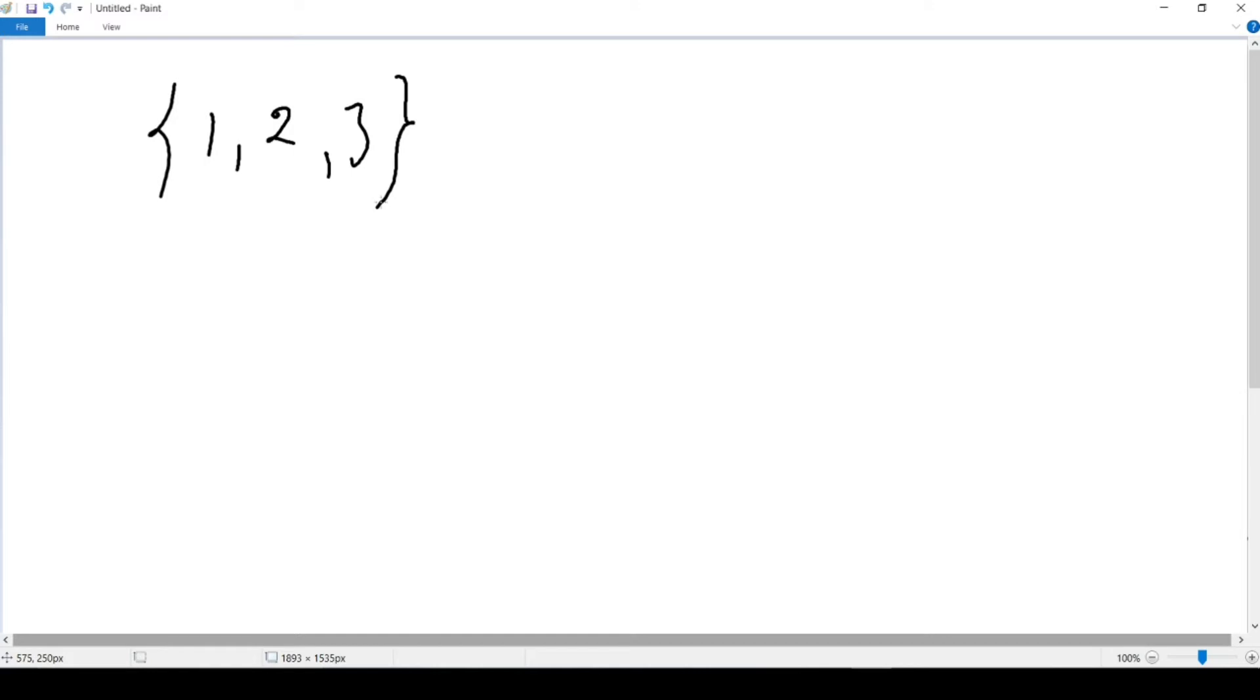So to find the average of my set right here, I will do 1 plus 2 plus 3 and then divide it by 3. Otherwise, we add all numbers from our set and we divide it by the number of numbers in our set. In this case we have 1 number, 2 numbers, 3 numbers—that's why we divided this by 3.